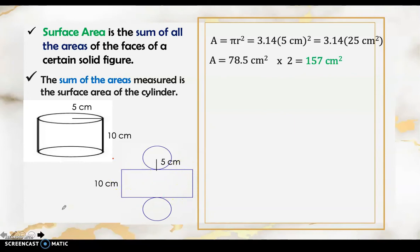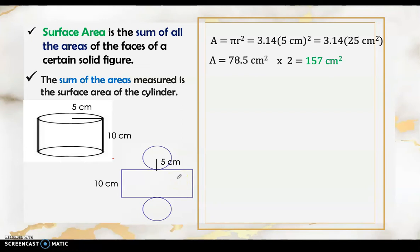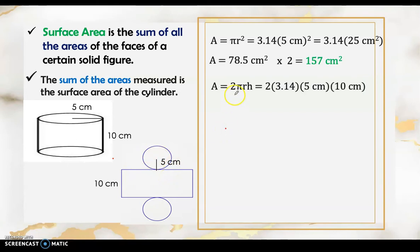Now let's look at the curved face, which appears as a rectangle when we draw the net of the cylinder. The area of a rectangle is length times width. This side is the height of the cylinder, and this other side — the length of the rectangle — is actually the circumference of the circular base. So if we form a cylinder from this net, this side wraps around to form the circle equal to the base. The formula for circumference is 2πr, so the formula for this curved face is 2πrh.